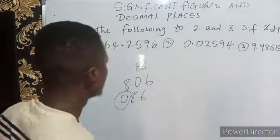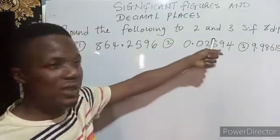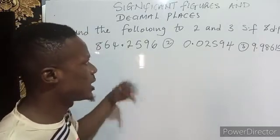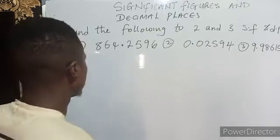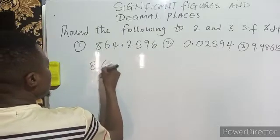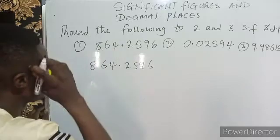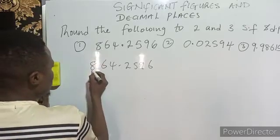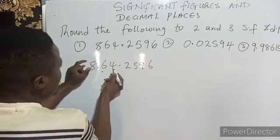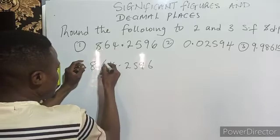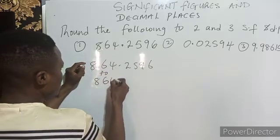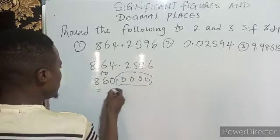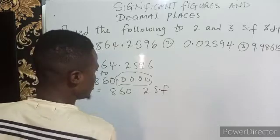That is why it is called decimal places. SF means significant figures; DP means decimal places. For the first question, I'll first put it to two significant figures and three significant figures before putting it to decimal places. For significant figures, having 864.2596 — to two significant figures you begin to count from the first number. You count one, two and stop. The number next to it is not up to five so you add zero, making 860. Every other number turns to zero, but in the decimal part zero is insignificant, so the answer is just 860 to two significant figures.